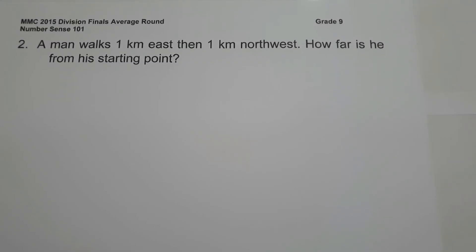On number 2, a man walks 1 kilometer east, then 1 kilometer northwest. How far is he from his starting point?